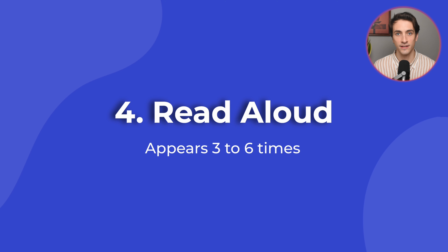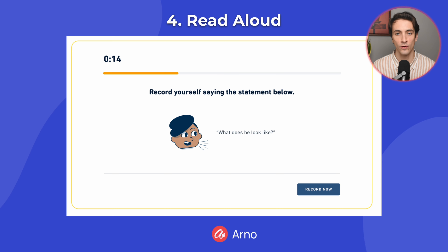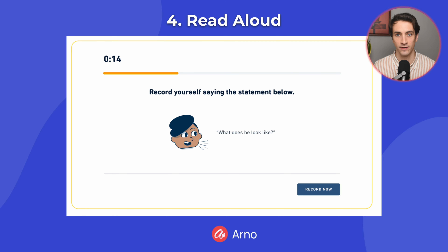Next is Read Aloud, which appears three to six times. You will be given a statement, and you have to record yourself saying that statement out loud. For all speaking questions on the Duolingo English Test, you can only record yourself one time.